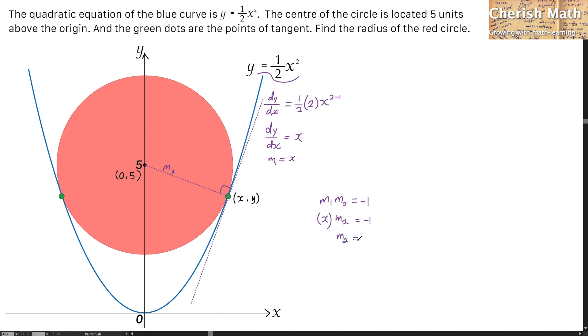I can also find the gradient of this radius by using this coordinate and this coordinate together. And that is going to be the difference of the y for the numerator: y minus 5.